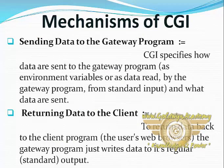Now we are coming on the topic of mechanisms of CGI. Two mechanisms for the basics of Common Gateway Interface are: first, sending data to the gateway program; and second, returning data to the client. CGI specifies how data are sent to the gateway programs — as environment variables or as data read by the gateway program from standard input — and what data are sent.